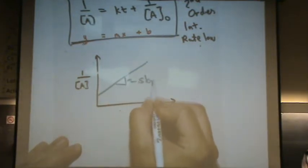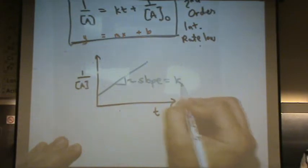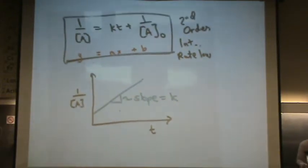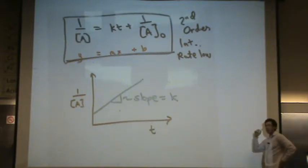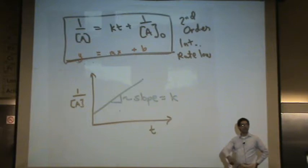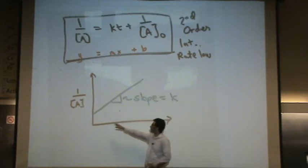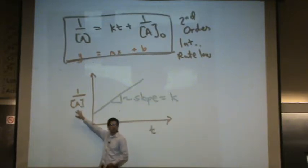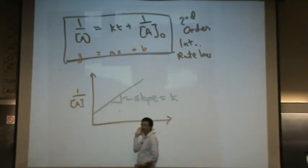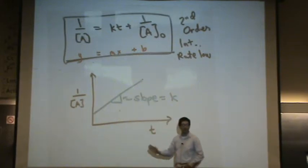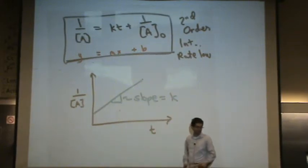Here, the slope just straight up equals k, the rate constant. So, now, if you have data and I ask you, hey, show me that it's second order, you would say, okay, I'm going to plot the reciprocal of the reactant concentration versus time. And if I get a line sloping upwards, it's confirmed second order.